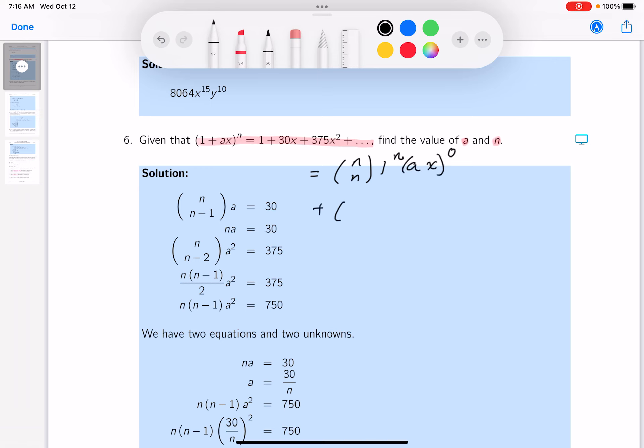Let's write the next term down. It's going to be n choose n minus 1, then you get 1 to the n minus 1 times ax to the first power.